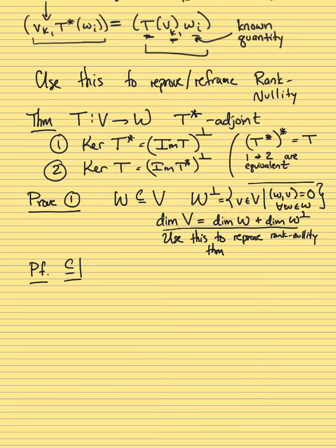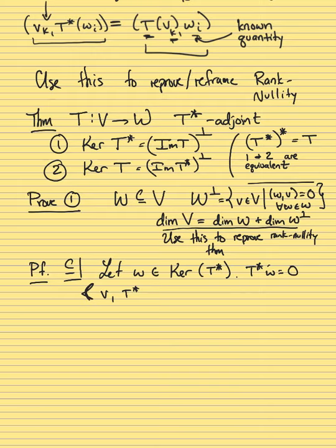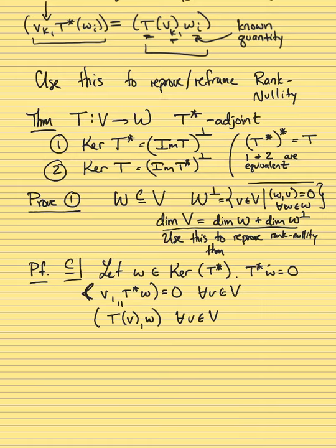Now let's prove claim one by showing double containment. First direction: take a w in the kernel of T*. This means T*(w) = 0. So the inner product of v with T*(w) is zero for all v in V. But by the adjoint formula, this equals the inner product of T(v) with w, which is also zero for all v in V. Therefore w is in the orthogonal complement of the image of T — we've shown the inner product of T(v) with w is zero for all v, which is exactly what it means to be in the orthogonal complement.